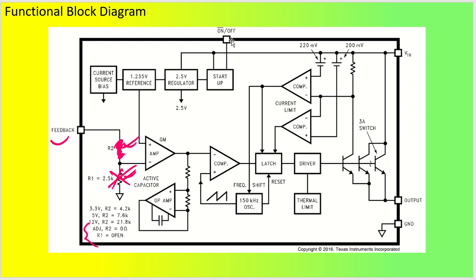Regarding on/off control: pulling the on/off pin low switches the output on, pulling it high switches it off. When pulled high, the reference voltage is pulled up, disabling the output. The block diagram shows the input voltage feeding into error amplifiers and drivers, with a current mirror circuit, to produce the output through the inductor.